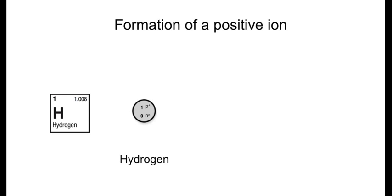Let's look at the formation of a positive ion. If we were to take hydrogen as our example, in its nucleus it's got one proton and it has one electron. Again, equal numbers of protons and electrons, therefore having a neutral charge.